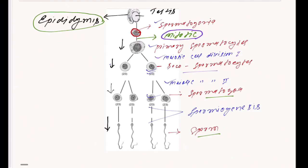So what is spermiogenesis? Spermiogenesis refers to the transformation of spermatozoa into mature sperm.